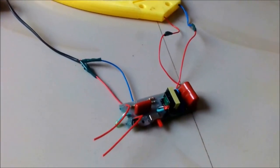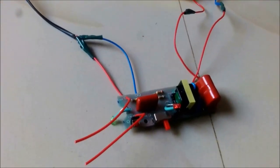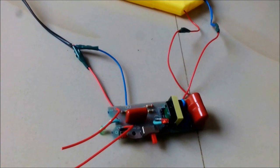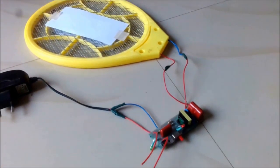Open the mosquito bat and remove the battery. In that place, connect a mobile charger of 5 volts capacity.